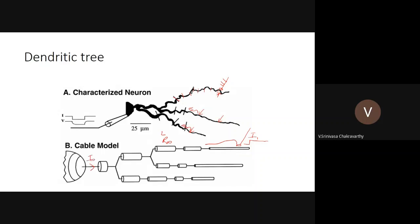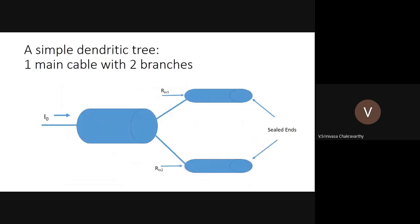Consider the simplest case: a main cable with current I_0 injected at its mouth. The main cable has electrotonic length L_0 and impedance parameter R_∞_0. Injecting a current produces some voltage distribution V_m(x) along the main cable. We'll then extend this to include branching dendrites.